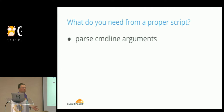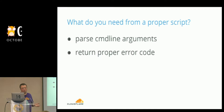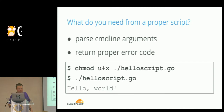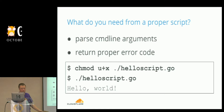But a script is a bit more than just a simple Hello World program. What do you need from a proper script? You want it to at least parse command-line arguments. Second, you want it to return a proper error code to the operating system — it's very common to integrate a script into a pipeline where different scripts communicate with each other. Error codes are how scripts communicate. And finally, you want the script to be directly executable without typing go run each time — just assign an executable bit and run it like Python.